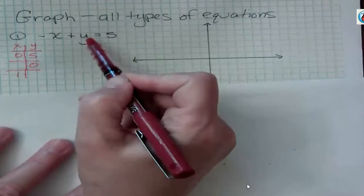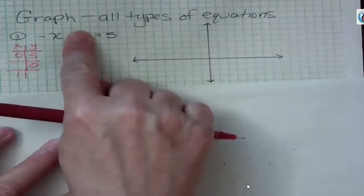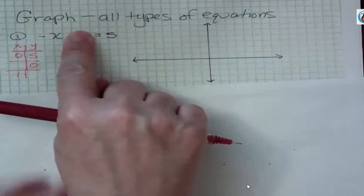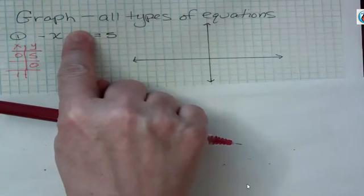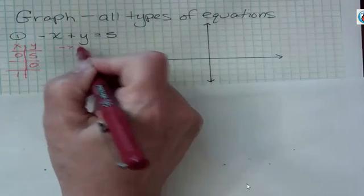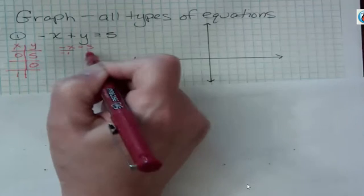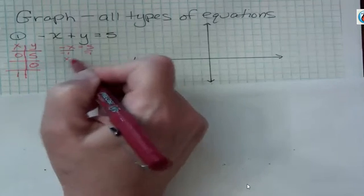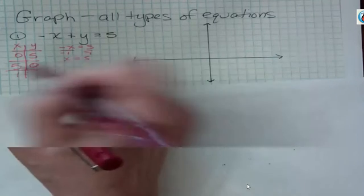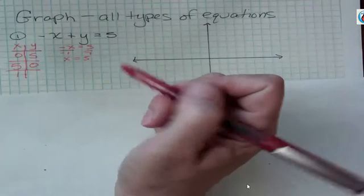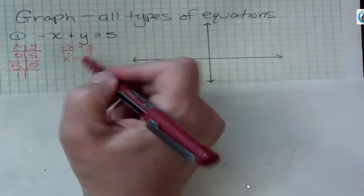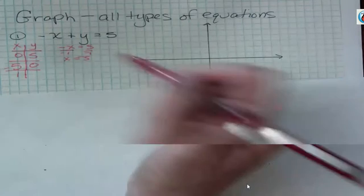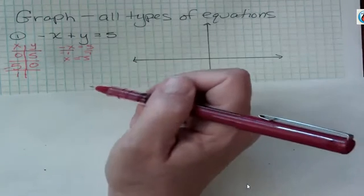Now, if y is 0 by the cover-up method, that's also going to go away, but I want to be a little more careful, because if y is 0, I have negative x equals 5. And so if I divide both sides by negative 1, I find out that x is negative 5. Negative 5 divided by negative 1.